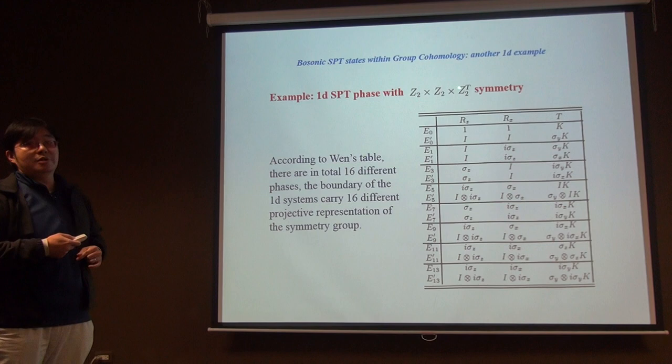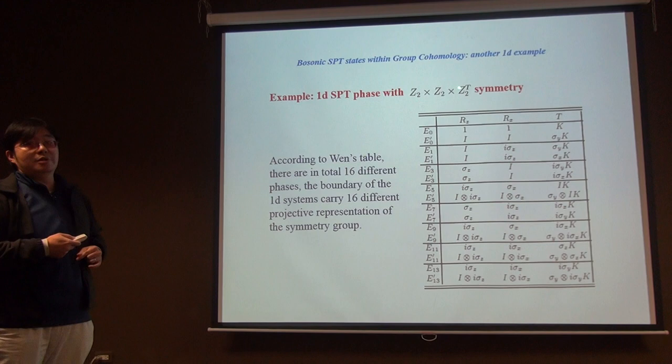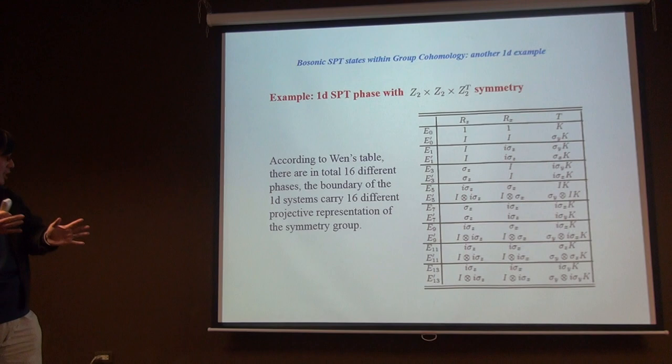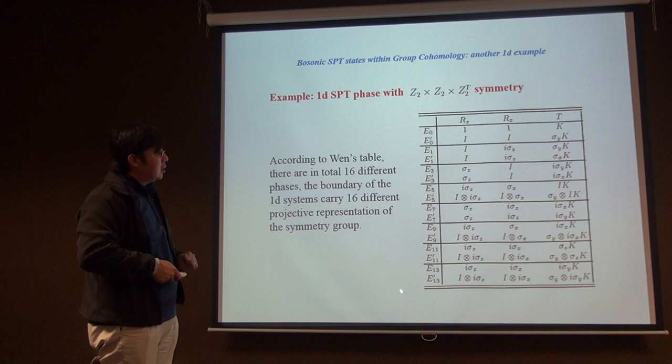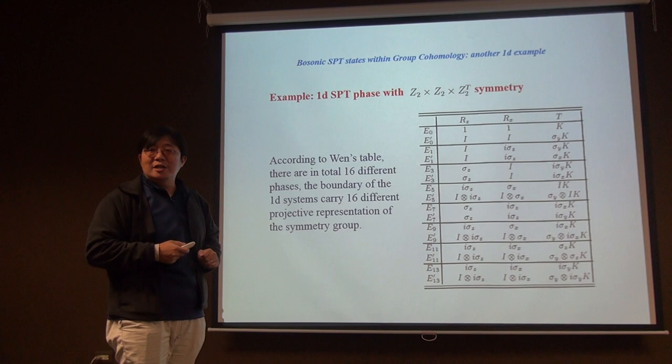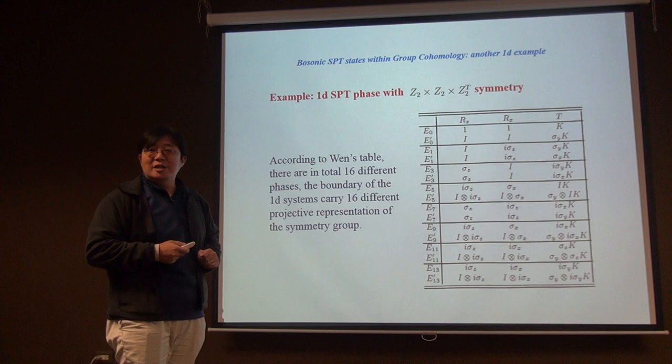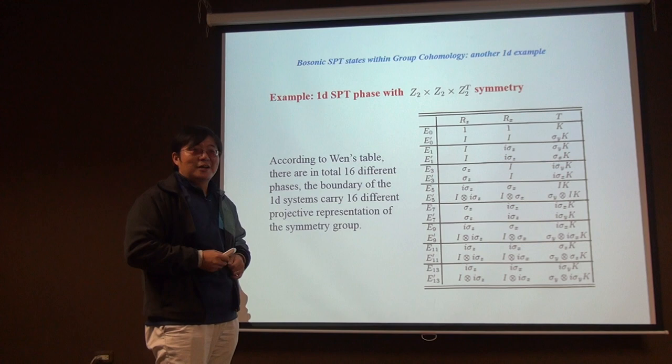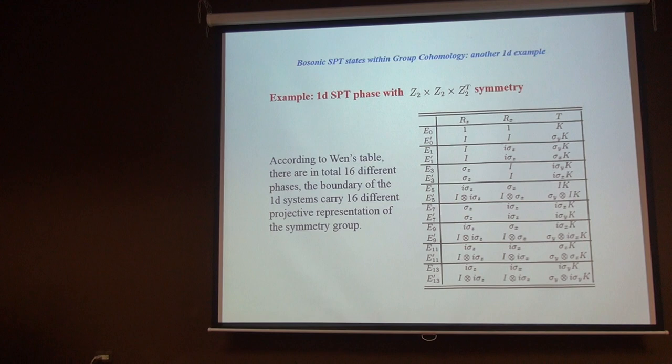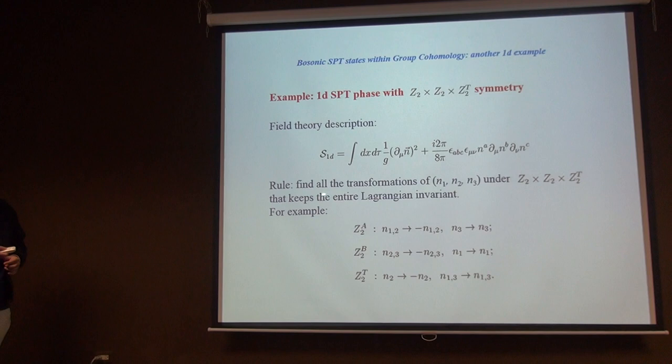As an example: 1D bosonic SPT with Z₂ × Z₂ × time-reversal symmetry. This case was studied thoroughly by Xiao-Gang Wen and collaborators, who found 16 different SPT phases with somewhat cryptic names. The claim is that all 16 phases are described by one single equation — the same NLσM — but the vector n transforms differently under Z₂ × Z₂ × T for each phase. The transformation rules are chosen to keep the entire action invariant under the symmetry.